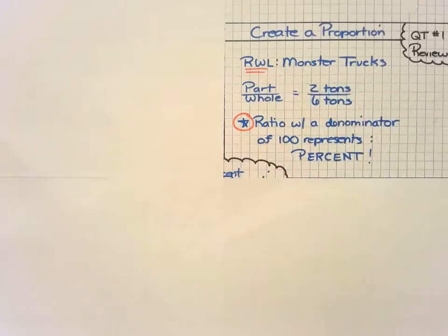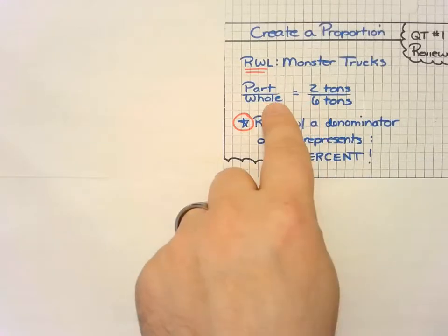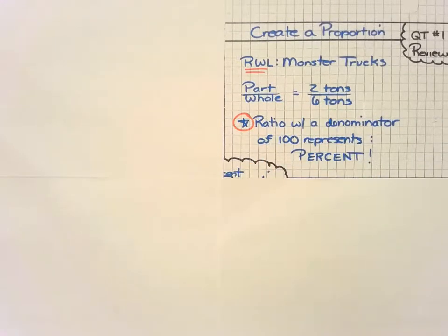In our introduction today with our real world link on monster trucks, we talked about how the tires are two tons of the total or the whole of the truck, which is six tons.